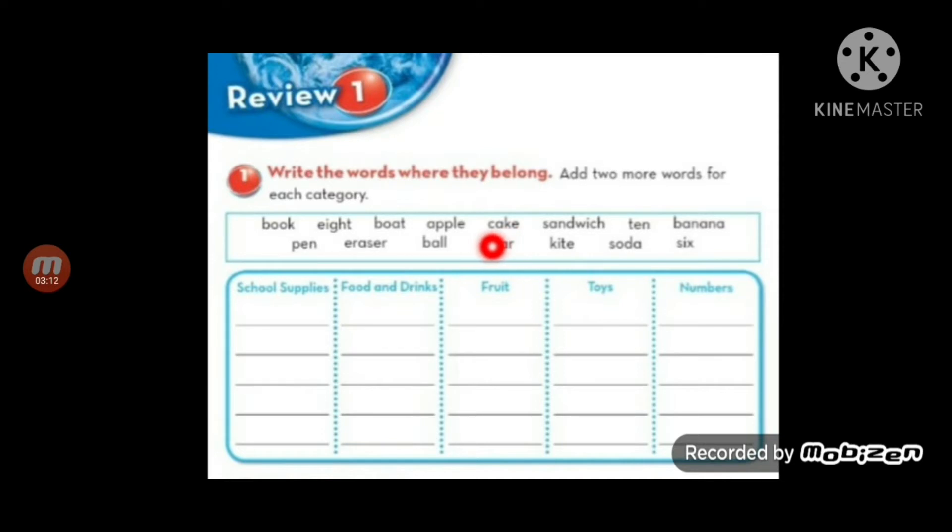Cake, the letter C has the sound K. C-A-K-E. The E is silent, came late so we don't pronounce it. Meaning cake. Sandwich, S-A-N-D-W-I-C-H. The C and H we pronounce as CH. Sandwich, which is sandwich, a kind of food.